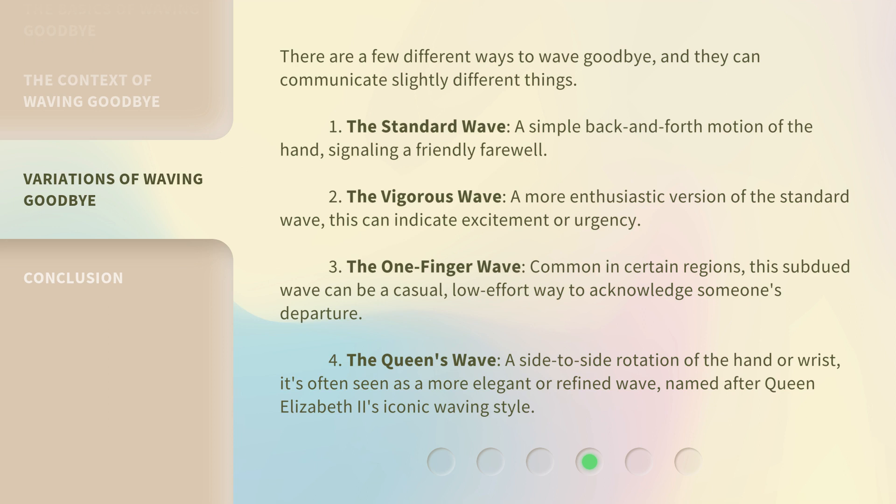Third, the one-finger wave: common in certain regions, this subdued wave can be a casual, low-effort way to acknowledge someone's departure. Fourth, the queen's wave: a side-to-side rotation of the hand or wrist. It's often seen as a more elegant or refined wave, named after Queen Elizabeth II's iconic waving style.